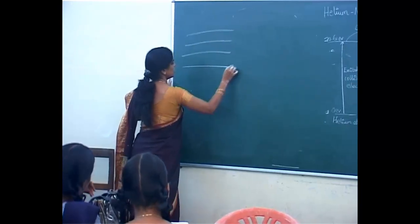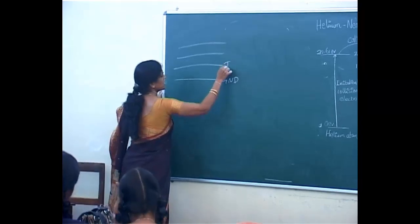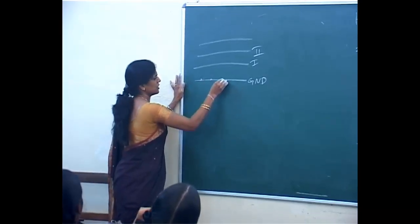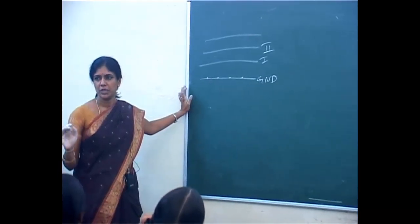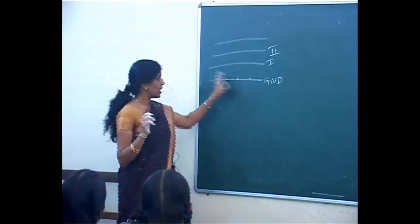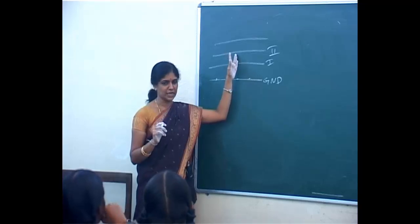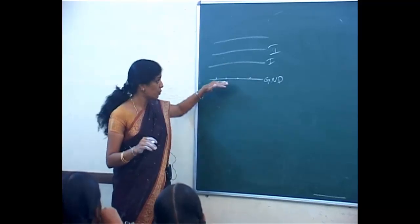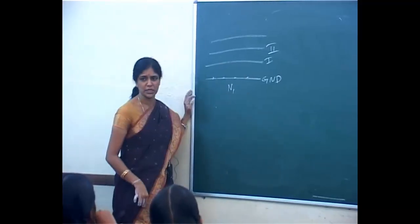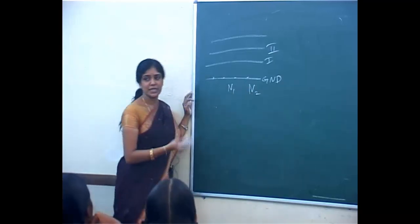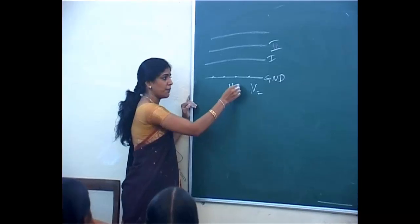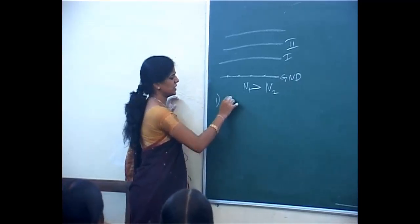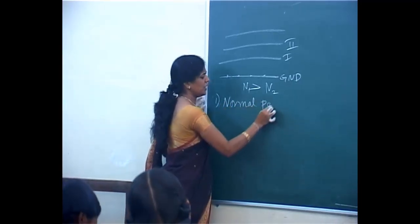Consider one element. This is the ground level. This is the first excited state and this is the second excited state. In thermal equilibrium, all the atoms are in the ground state. The ground state is the lowest energy — so it is stable. Let N1 be the number of atoms in the ground state and N2 be the number of atoms in the excited state. When the number of atoms in the ground state is more than in the excited state, we call it the normal population.